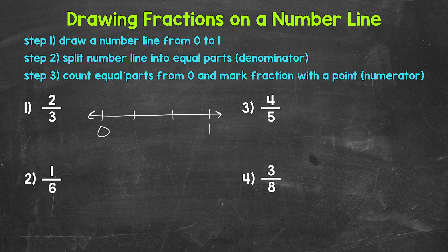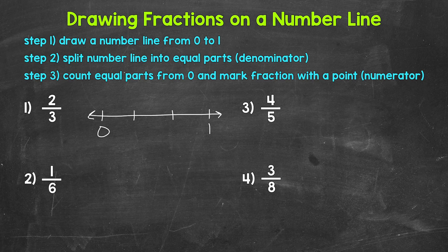Now keep in mind, we just need two tick marks to make three parts. Don't make three tick marks because that will give us four parts. Now that we have three total equal parts, we move on to step three, where we need to count a certain number of equal parts from zero and mark the fraction with a point. The numerator tells us how many equal parts to count. Our numerator is two, so we count two parts from zero: one, two.